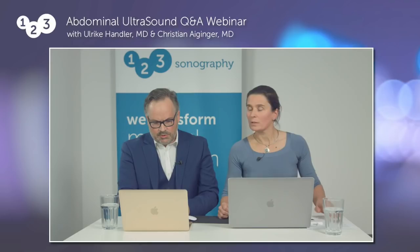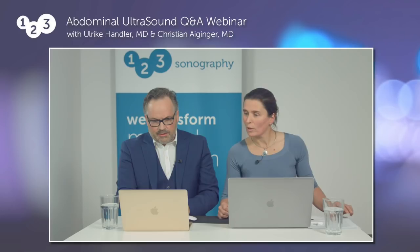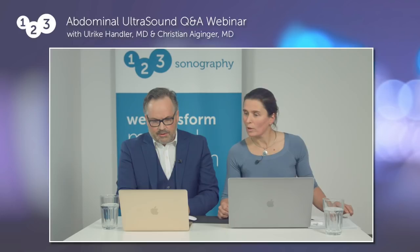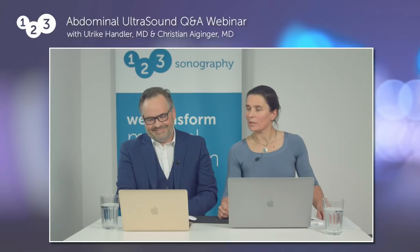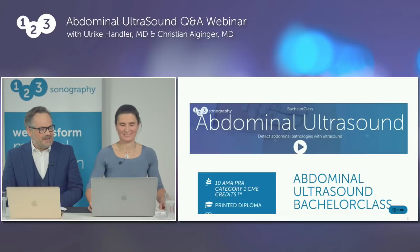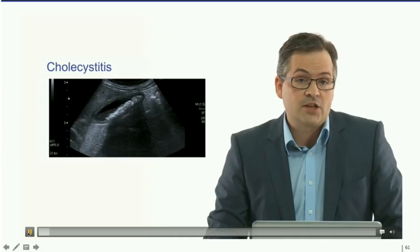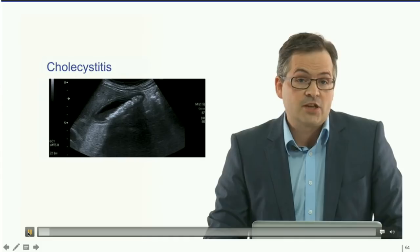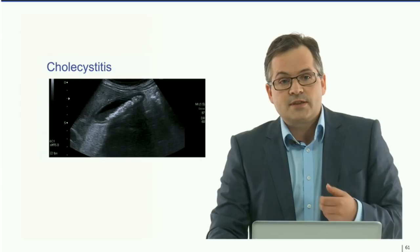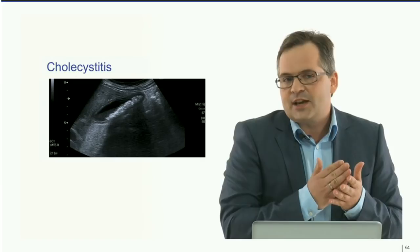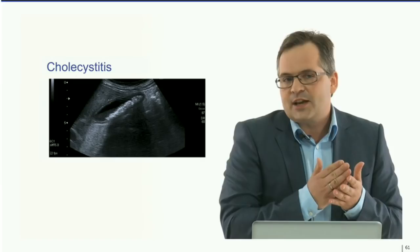Judith asks: how does acute cholecystitis appear in ultrasound? This is the perfect question for abdominal ultrasound. The findings of acute inflammation of the gallbladder: the sick wall shows its various layers — already three layers are visible — and there is pain when the gallbladder is touched by the transducer during the exam. This we call the sonographic Murphy sign.